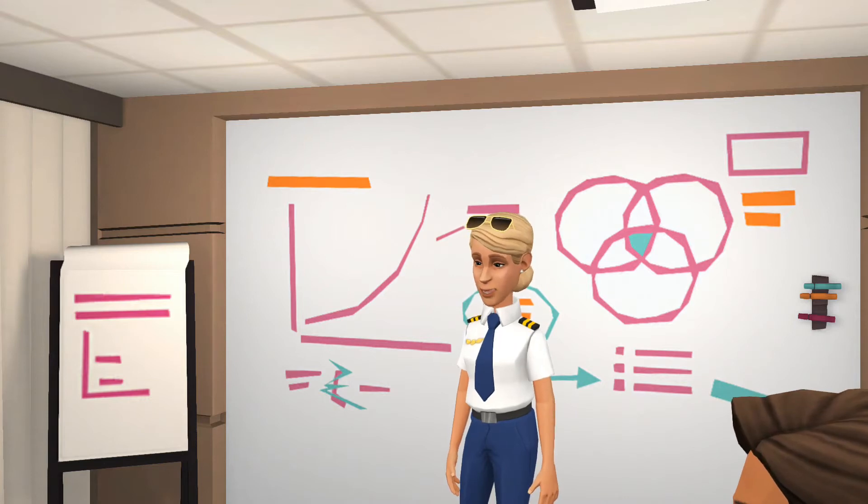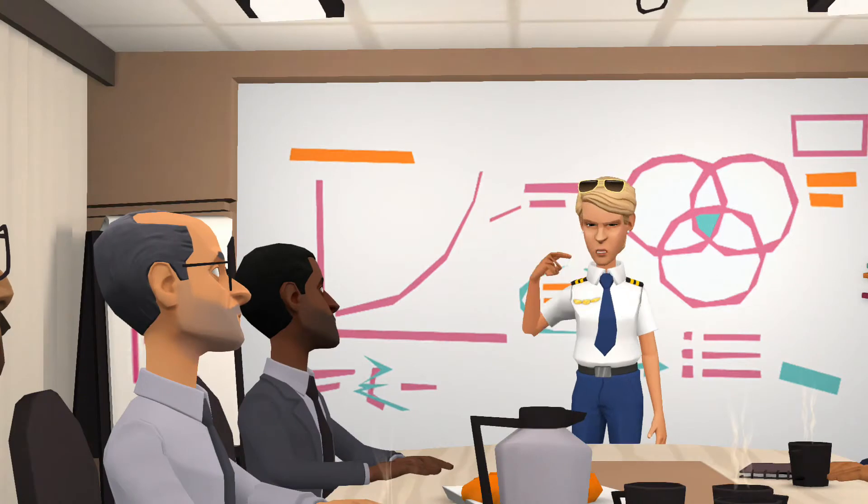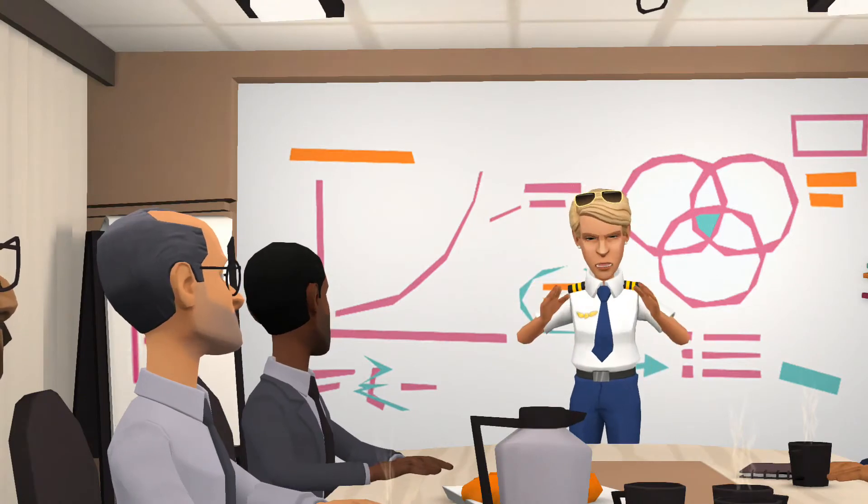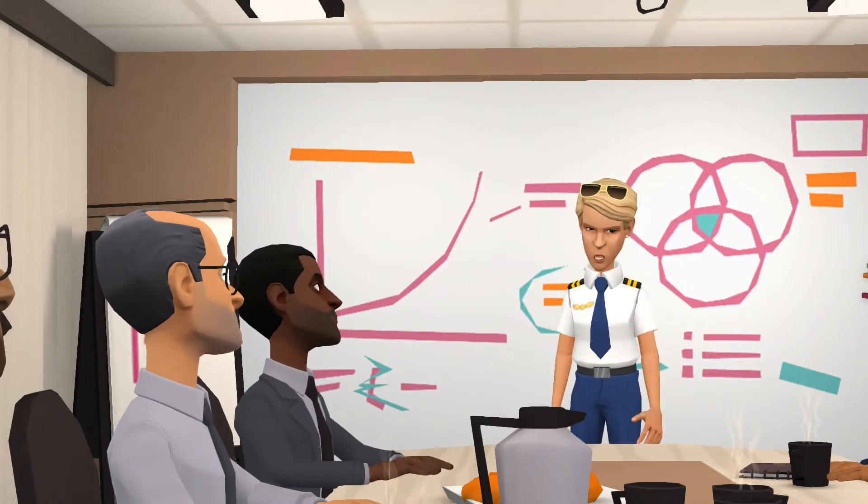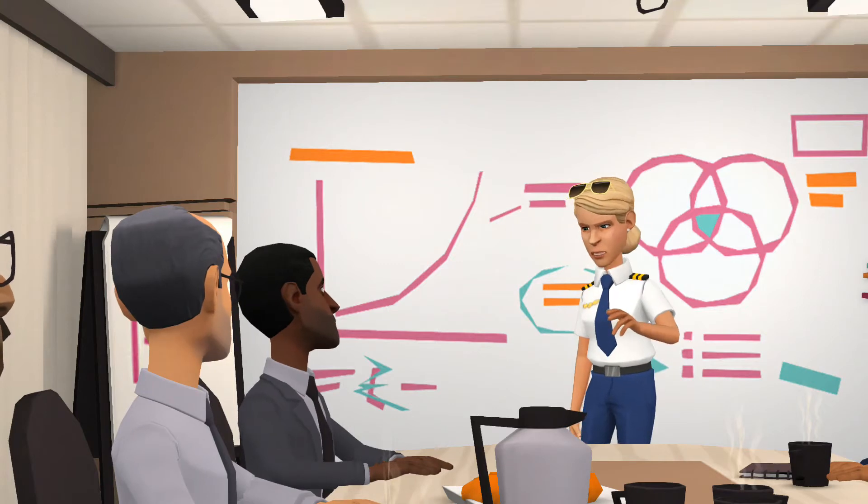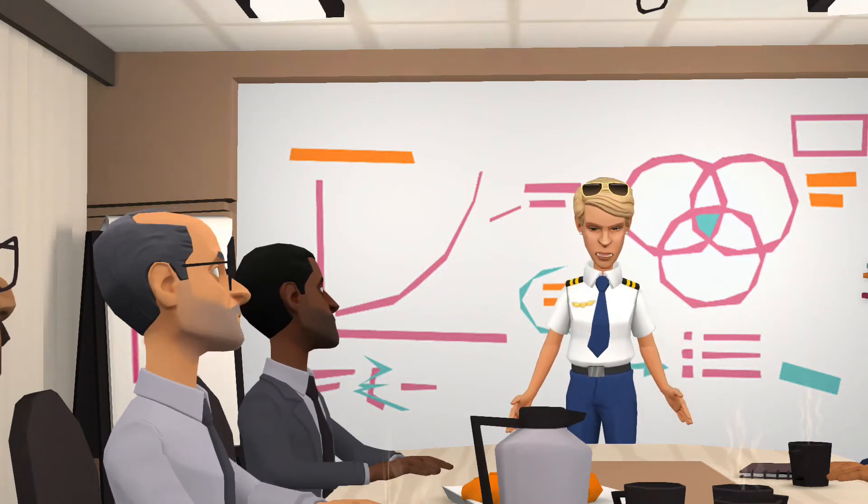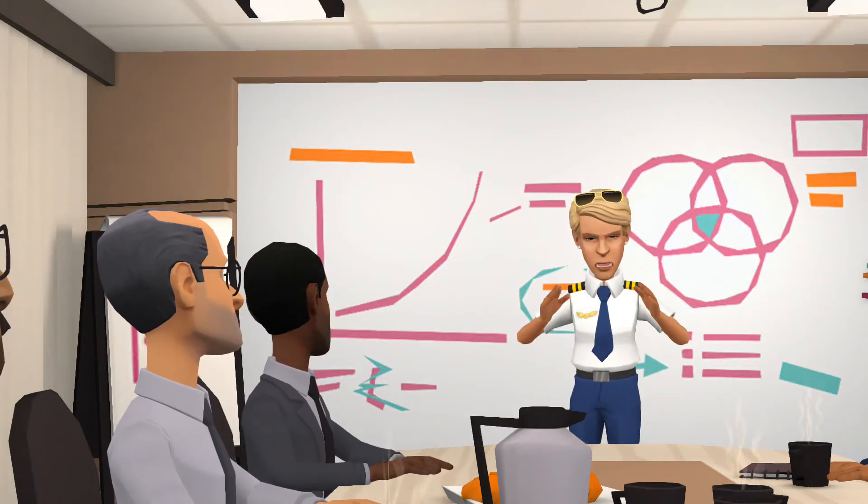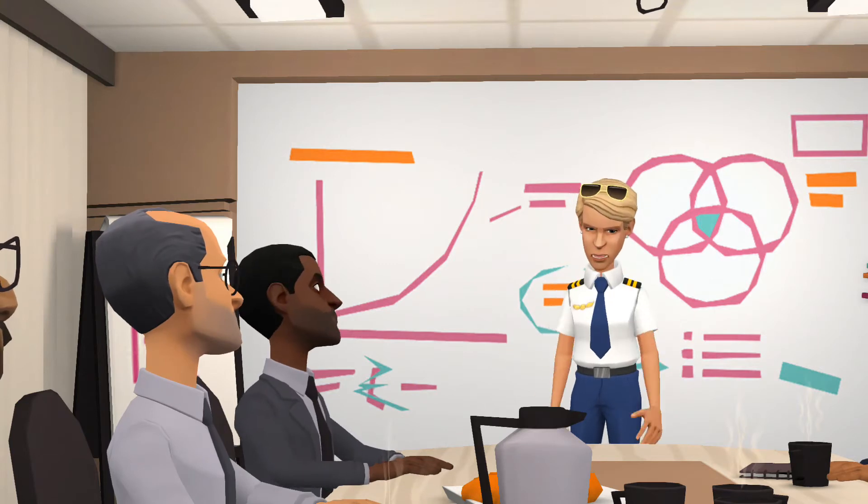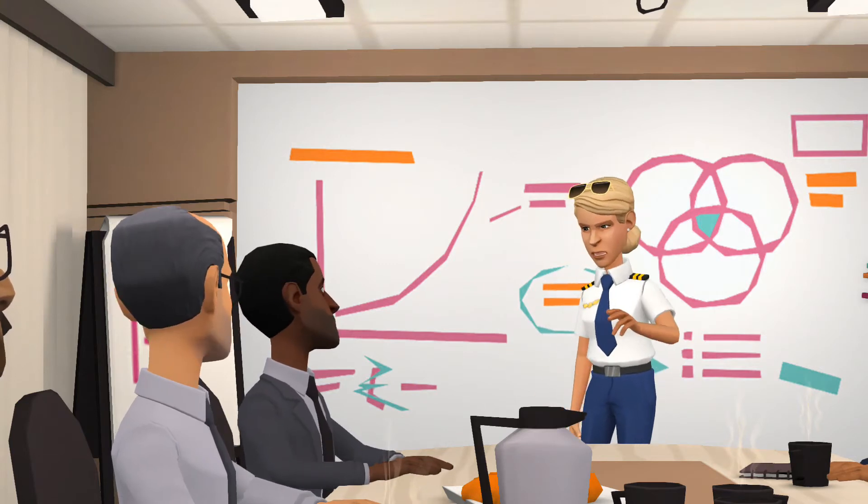In short, opportunity cost is the value of the next best alternative. For Alfonso, the opportunity cost of a hamburger is the four bus tickets he would have to give up. He would decide whether or not to choose the burger depending on whether the value of the burger exceeds the value of the alternative given up, in this case, bus tickets.